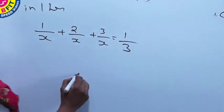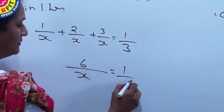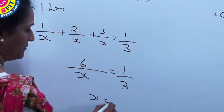So now same denominators, adding the numerator, we get X equal to 18.